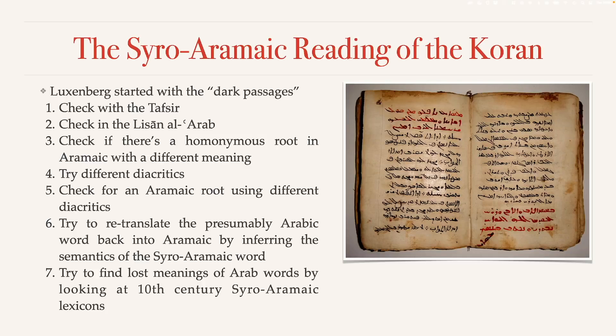However, the Lisan al-Arab is later than Al-Tabari. Luxenberg's rationale was that since Al-Tabari didn't have that dictionary, he may have overlooked some obscure meanings for certain words. If any alternative interpretations listed in the Lisan al-Arab lead to an understandable reading of the verse in question, it would be over at that point. However, if Luxenberg still doesn't find anything — which he usually didn't — he would move on to the next step.